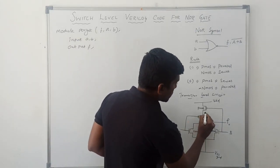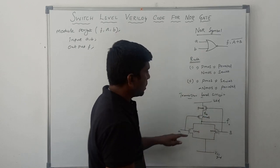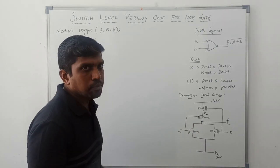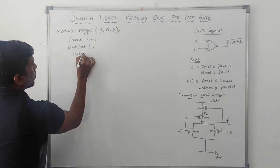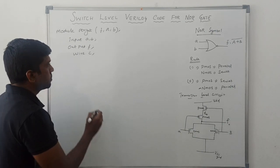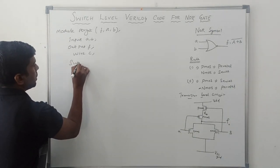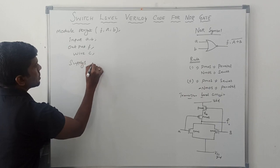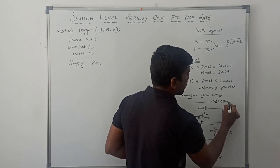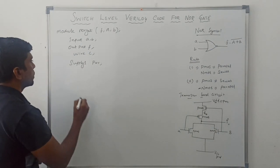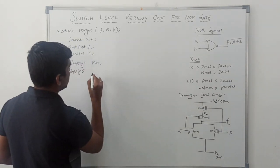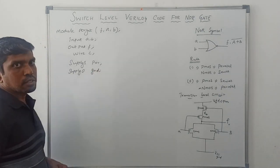In this structure, C is the wire. The output of the first P-MOS transistor is given to the input of the next P-MOS transistor, so we declare wire C. Then, declaration of supply1 and supply0. Supply1 is referred to as PWR, which represents VDD, so instead of VDD we are using PWR. Supply0 is ground.